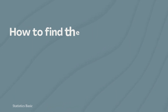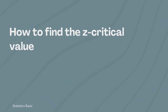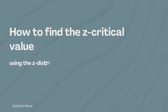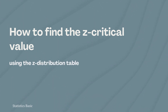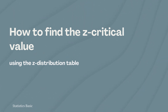In this video, we will try to find the z-critical values using the z-distribution table, which is also known as the standard normal table or unit normal table. We will go through some examples to understand the step-by-step procedure.